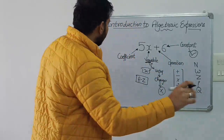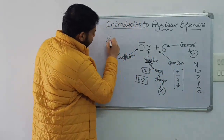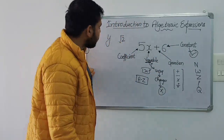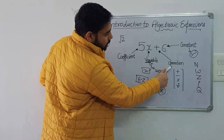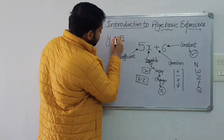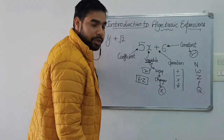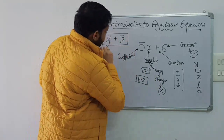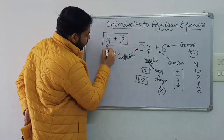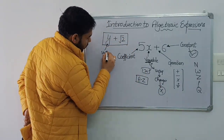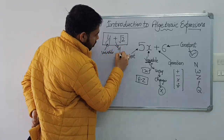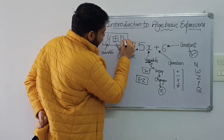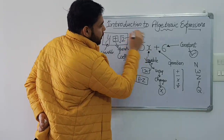For example, let's say we have a variable y and a constant √2. If we apply an addition operation, this gives us the expression y + √2, where y is the variable, + is the operator, and √2 is the constant. This is the basic definition of an algebraic expression.